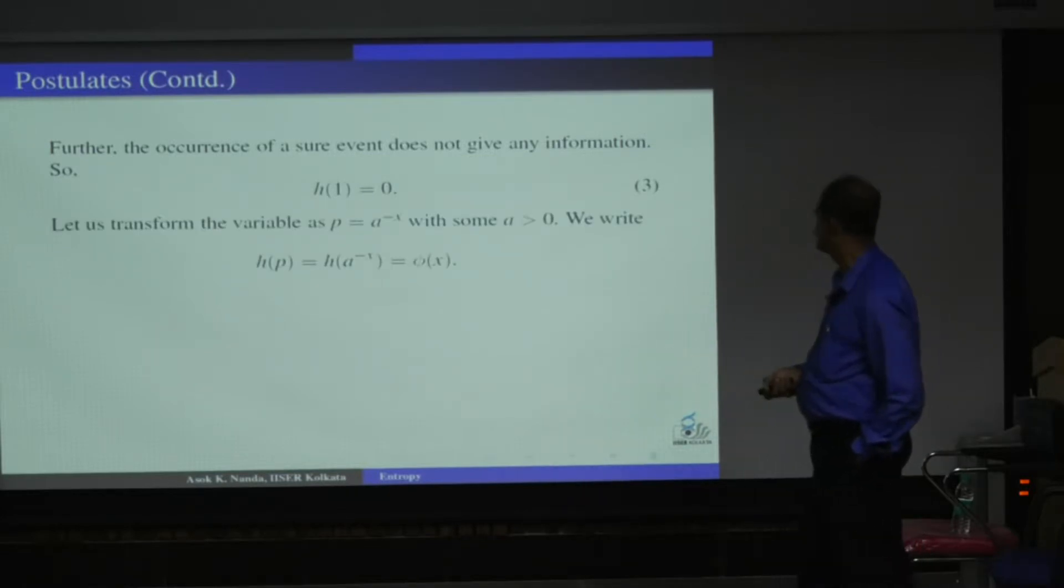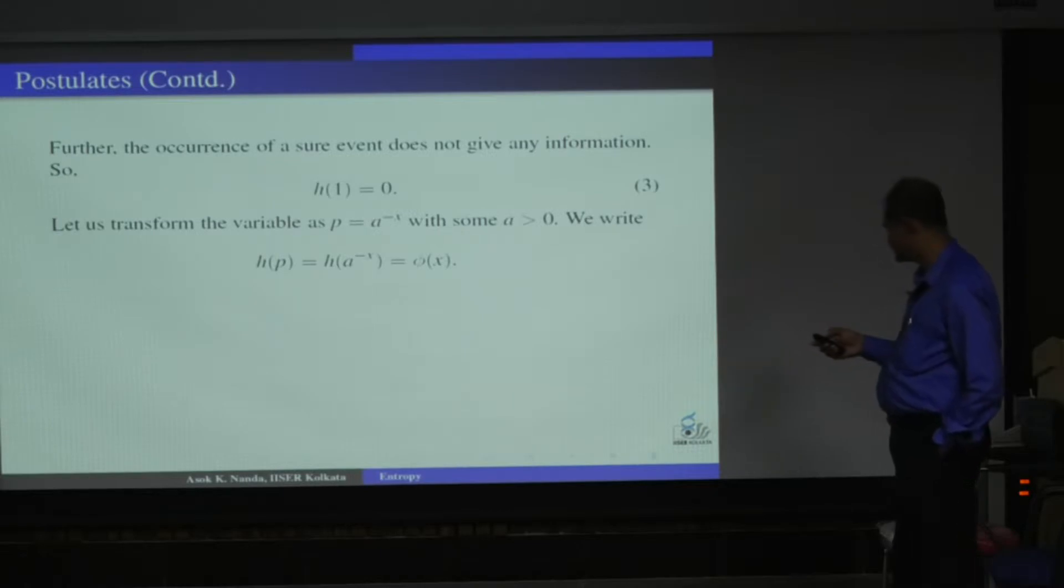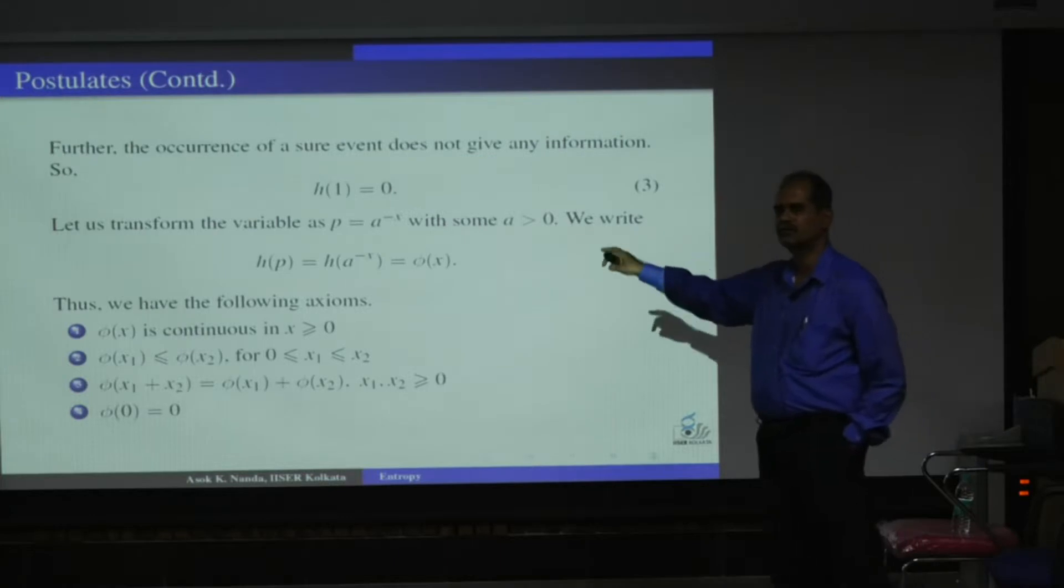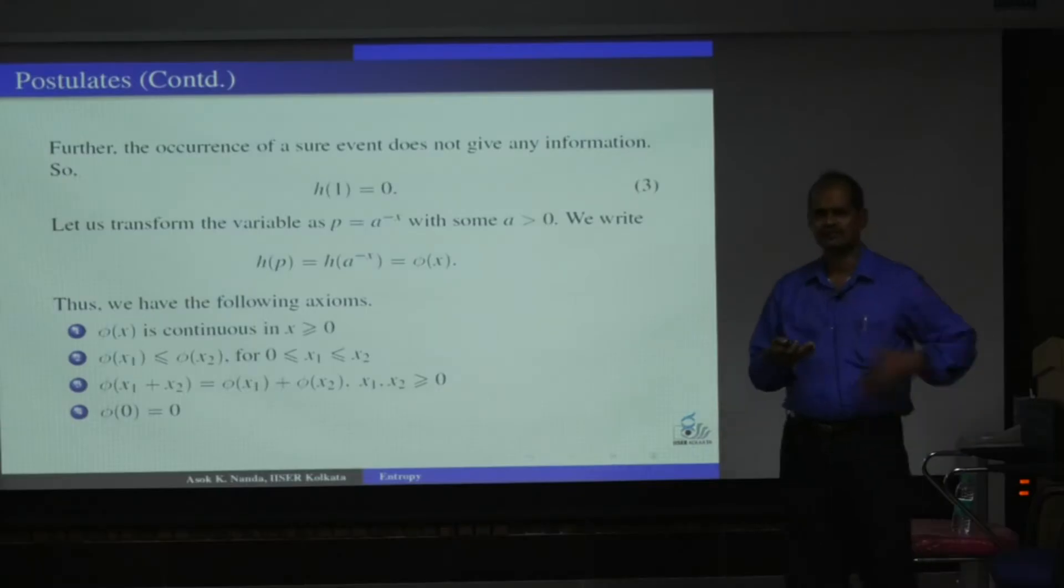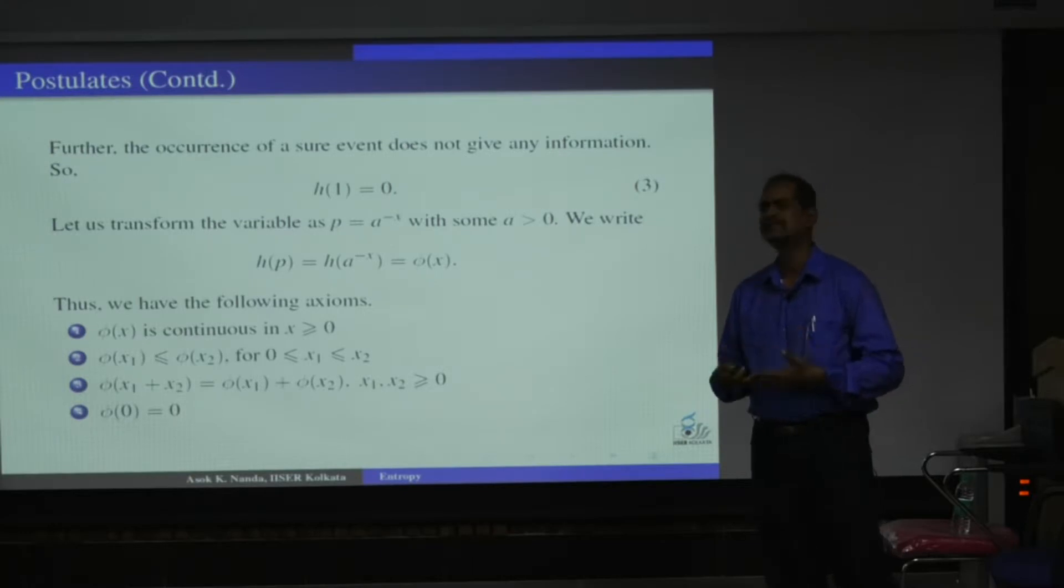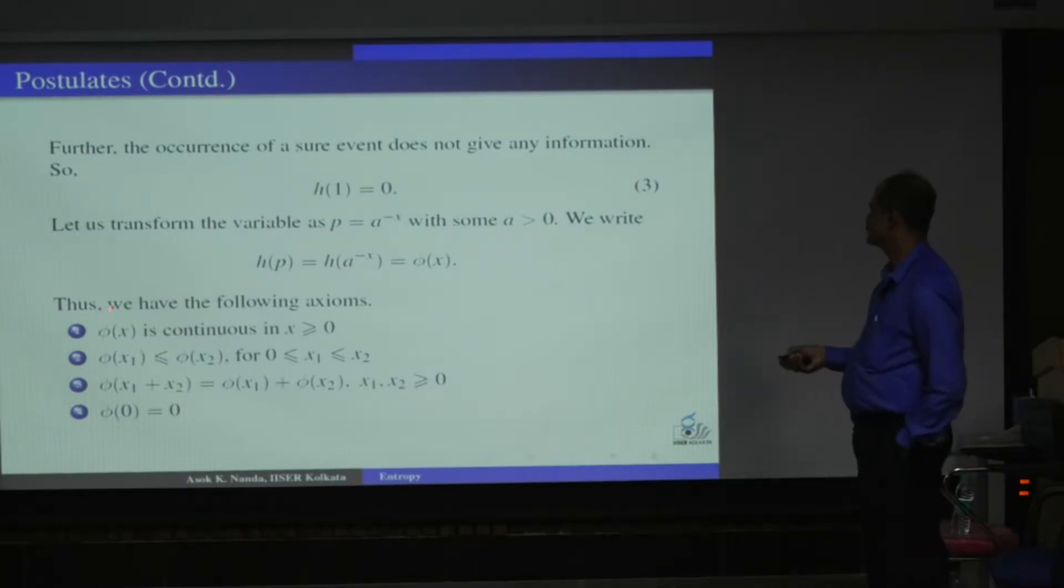We transform very simply. P is a to the power minus x. So your H(P) is in terms of x, I am trying to write as phi(x). And obviously, based on the properties of h that we have written, your phi should satisfy these conditions. The phi(x) is a continuous function in x, because small information once I get, then I will have some kind of less uncertainty, whatever prevails before I get this information. So this is a continuous function in x. Phi(x1) is less than or equal to phi(x2) when x1 is less than or equal to x2. Phi(x1 plus x2) is phi(x1) plus phi(x2). Everything is coming from HP once you transform this. And phi(0) is 0.